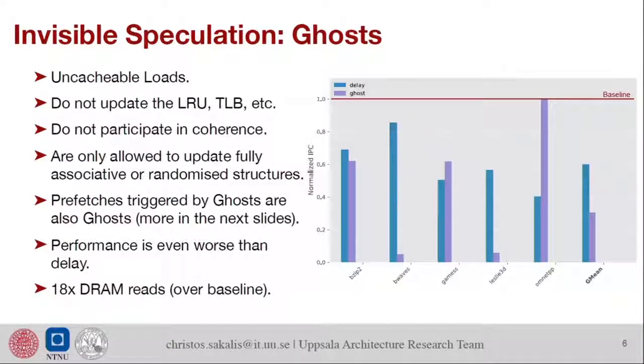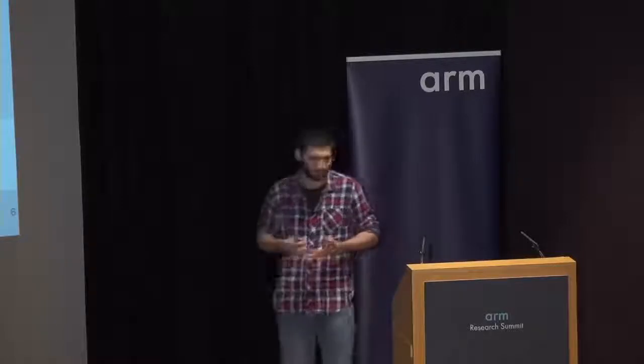It turns out that this is even worse than not doing speculation at all. Essentially what we're doing is we're disabling caching for a very large percentage of the accesses of an application. The performance is, to put it nicely, terrible. We've observed that for some applications you increase the DRAM accesses quite a lot, and on average this is like 18x, not percent but x, 18 times more memory accesses. Also not great.